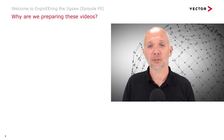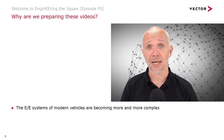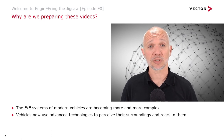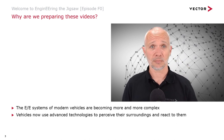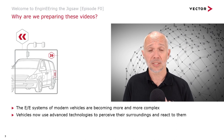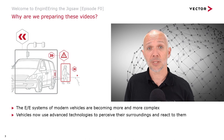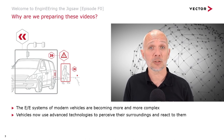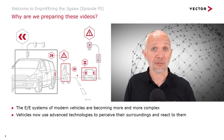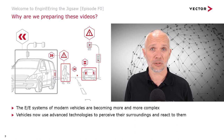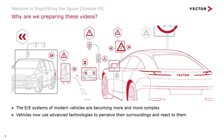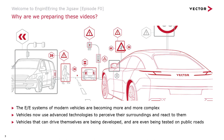So why are we preparing these videos? The EE systems in modern vehicles are becoming more and more complex. Vehicles are now starting to use advanced technologies to perceive their surroundings and react to them. For example, a vehicle can detect other vehicles coming towards it, see pedestrians and understand which way they're moving, detect traffic signals set to stop and cars stopped at those signals with brake lights on, and see road signs and understand what they mean. Vehicles that can drive themselves based on these technologies are being developed and even tested on public roads right now.